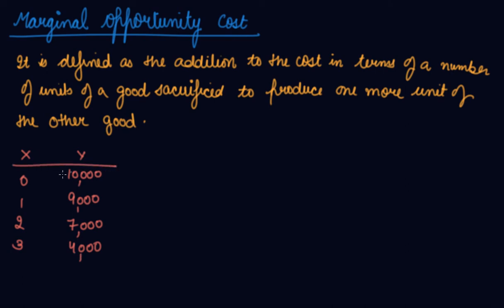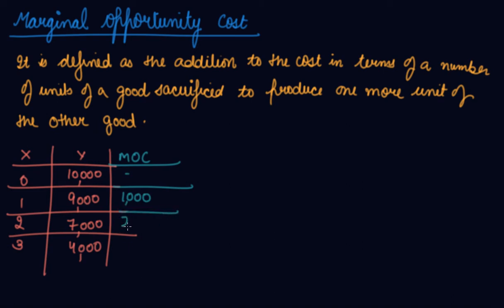So in this, your marginal opportunity cost is nothing. Here it is one thousand, here it is two thousand, and here it is three thousand.